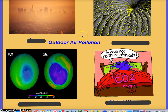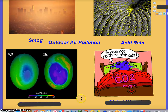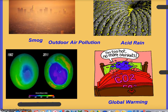The major outdoor air pollution problems we're going to focus on: look at this picture — what does it show? Global warming, which is part of climate change. Acid rain. And ozone depletion.